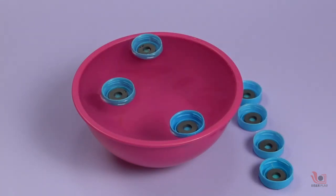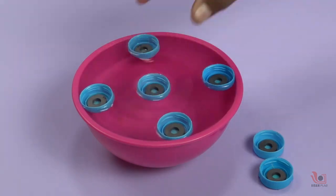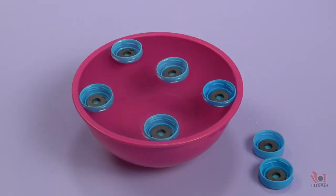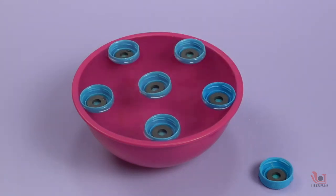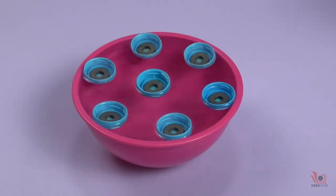Magnets are made from materials like iron, nickel, cobalt, steel, rare earth metals and their alloys. Most of these materials are denser than water. When we drop them in the water, they would sink.